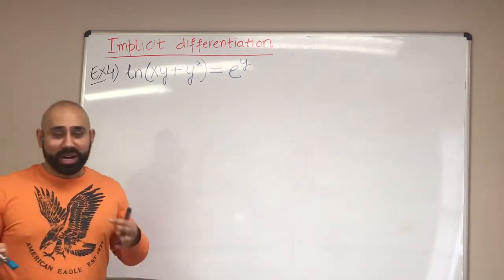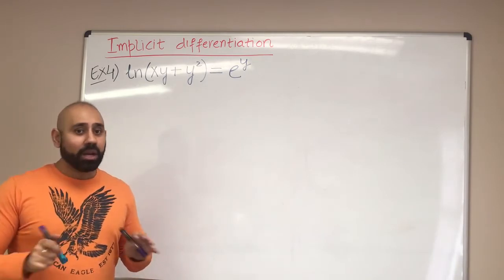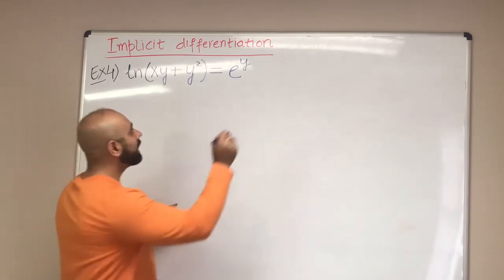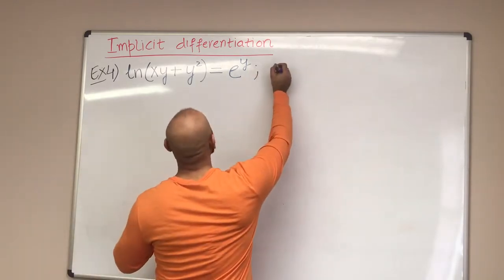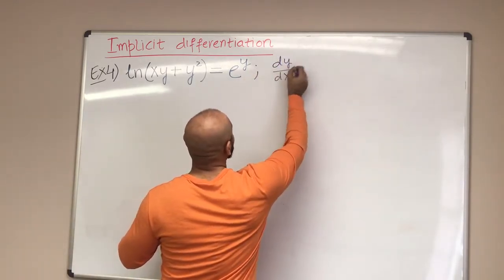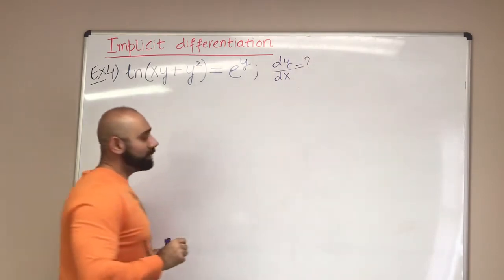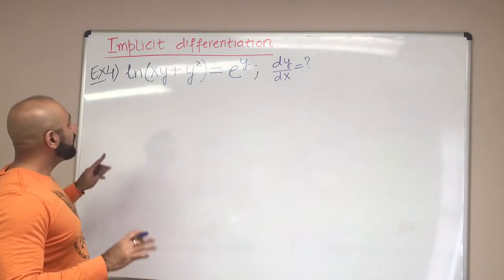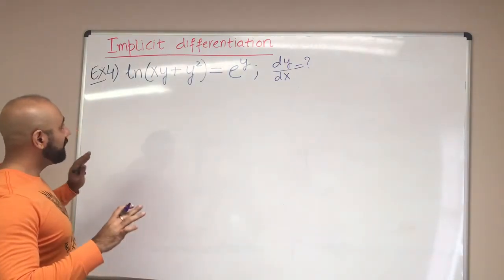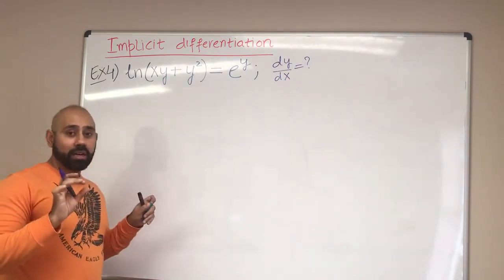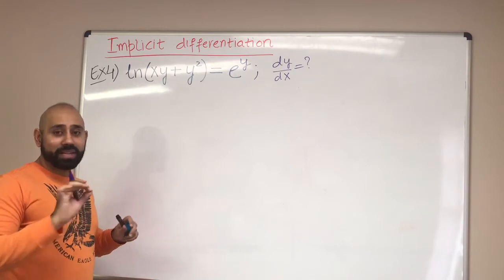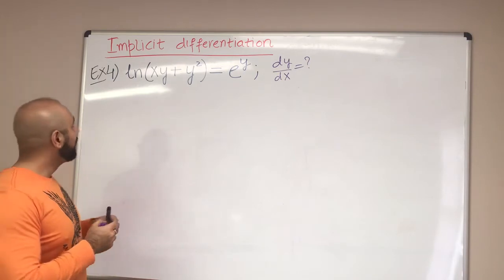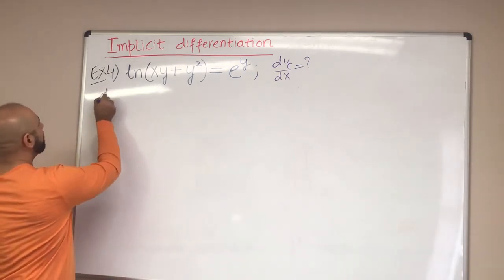We are not going to try to solve explicitly for y. All we're going to do is apply the derivative on both sides. What we want to find is dy/dx — that's what we want in each of these cases. So applying the derivative on both sides, there are going to be a lot of steps, so let's write out each step carefully and eventually evaluate dy/dx.